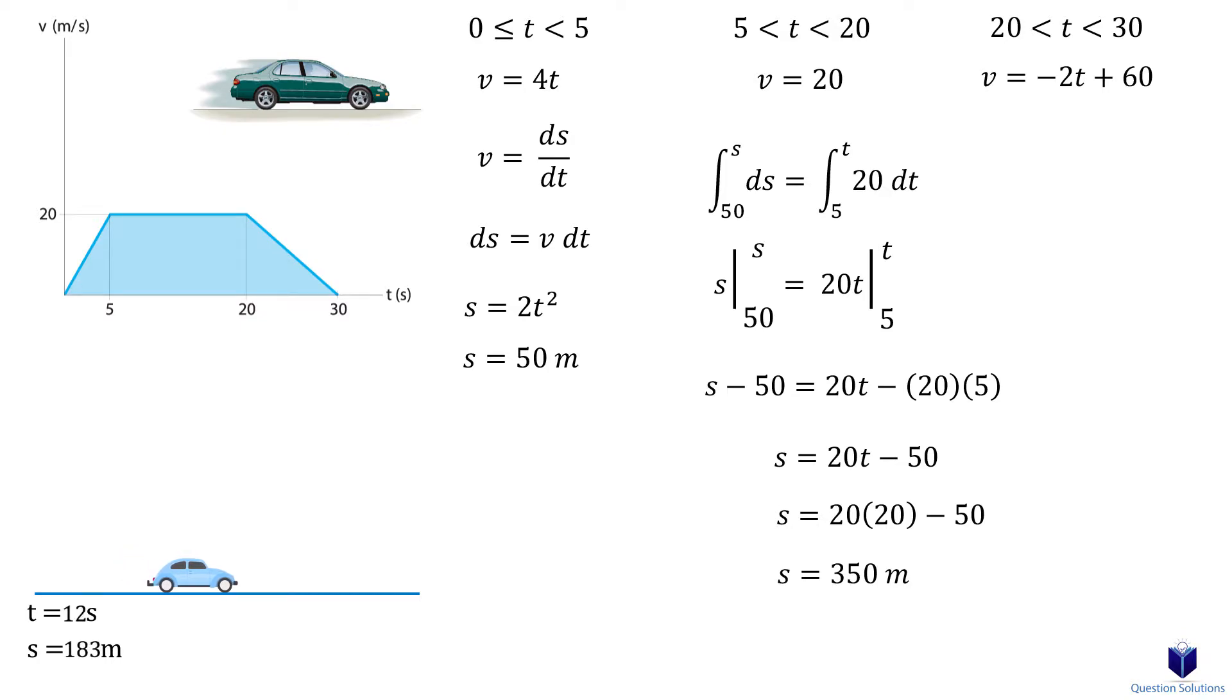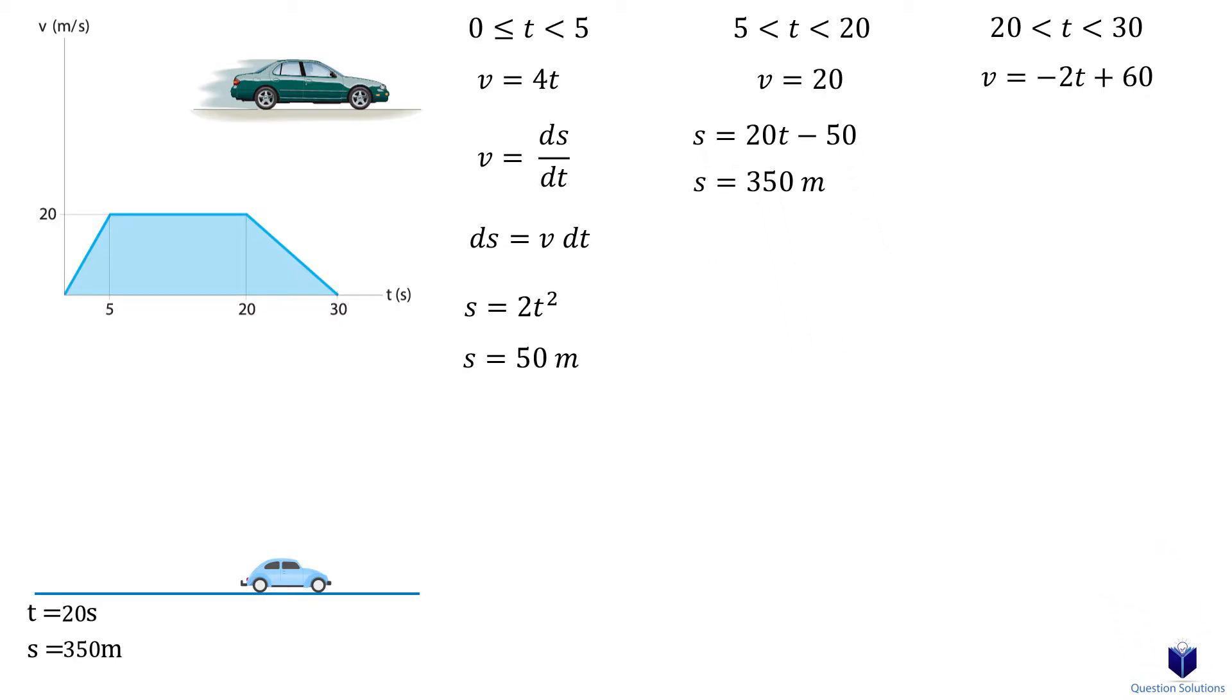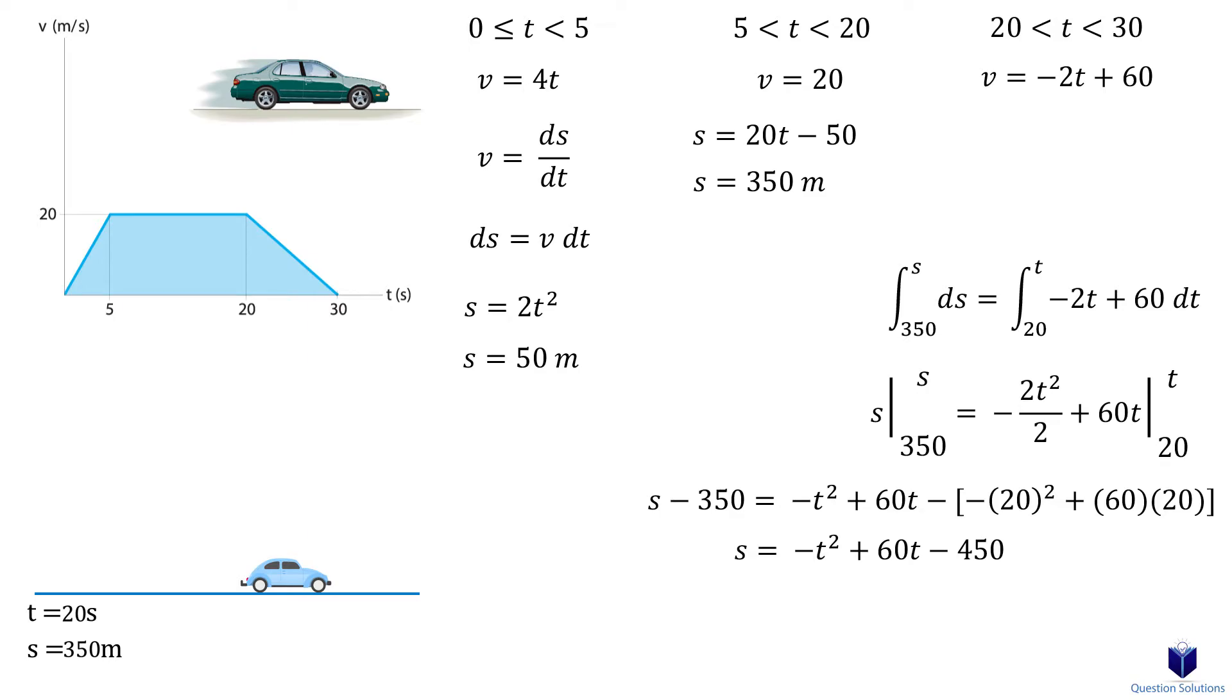The car has moved a total of 350 meters in 20 seconds. We will do the same as before for the last segment. The lower bounds for the displacement starts at 350 meters and the time starts at 20 seconds. Solving gives us our displacement equation.